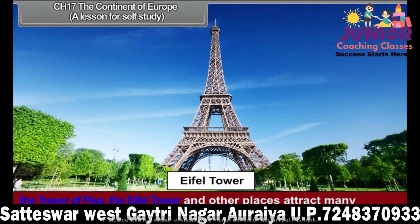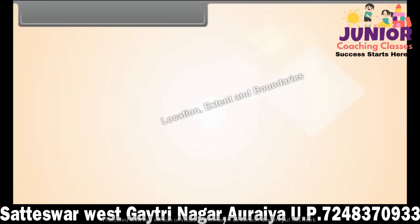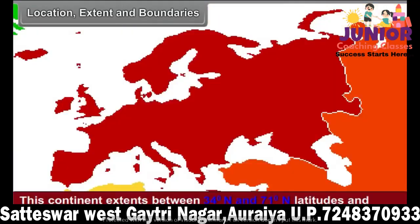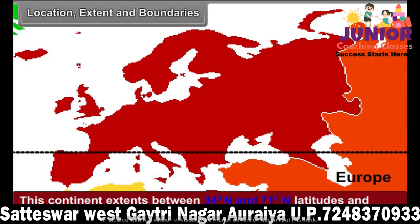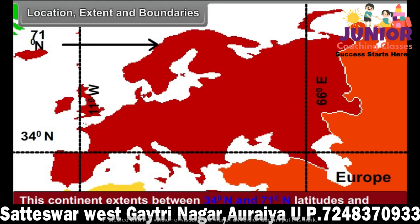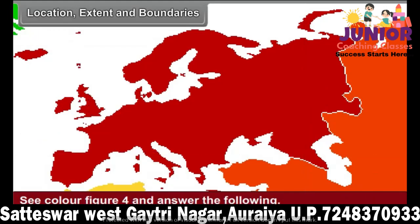Find the answers to the following questions with the help of maps and of your teachers. Location, Extent and Boundaries: This continent extends between 34 degrees north and 71 degrees north latitudes and between 11 degrees west and 66 degrees east longitudes. See color figure 4 and answer the following.